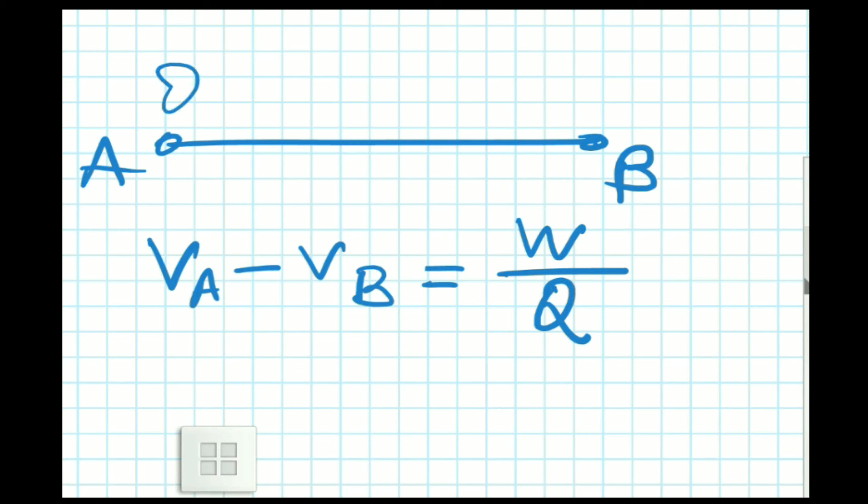If Q amount of charge are brought from point A to point B, and W is the work done, then the potential difference will be W by Q and its unit will be volt. The unit is joule per coulomb.